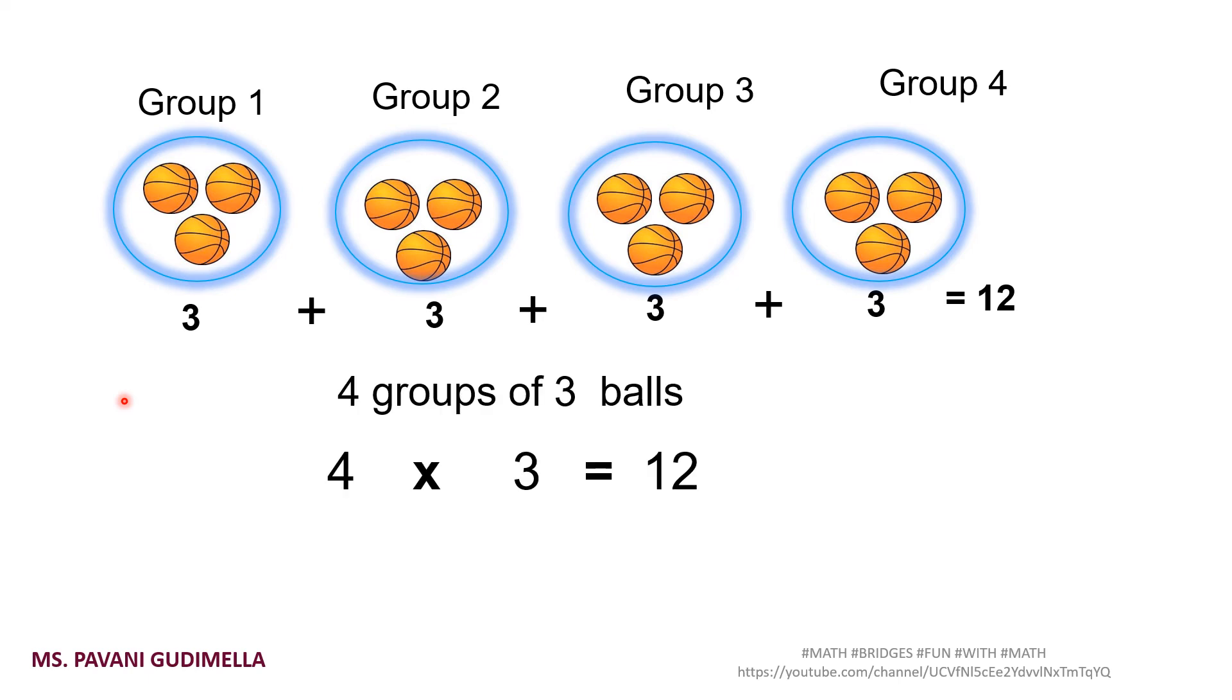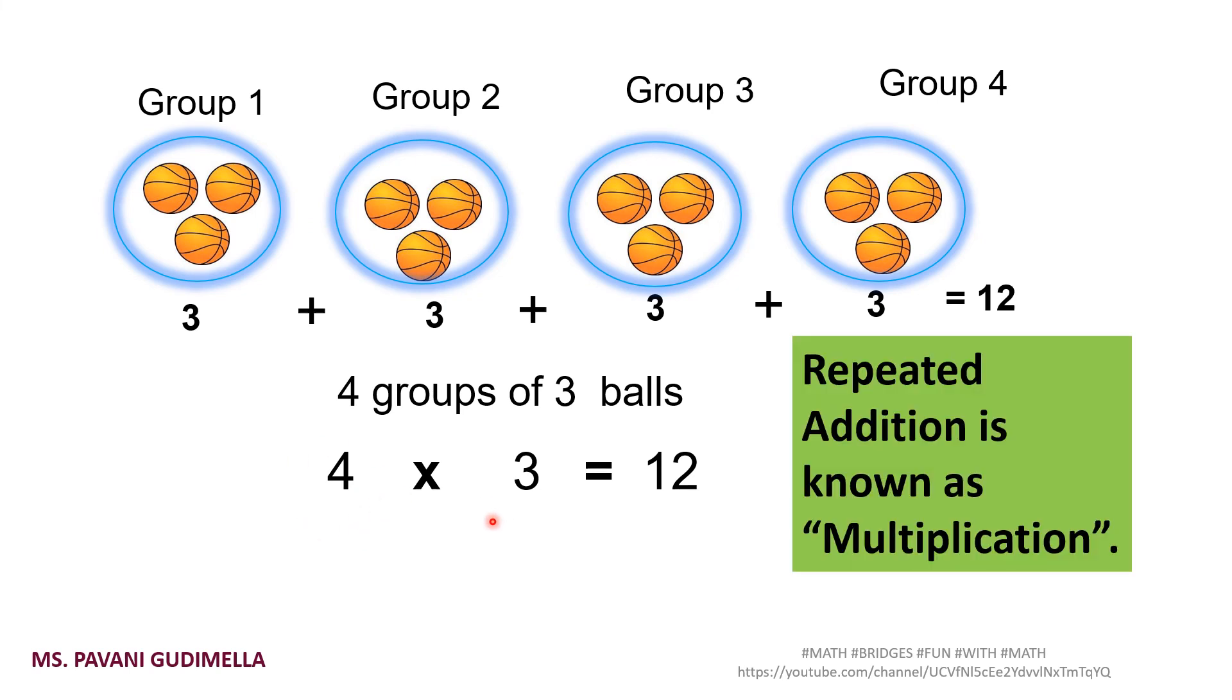How do we write it? The multiplication factor will be 4 groups of 3 balls. That means 4 times 3 has been repeated. We will read it mathematically as 4 threes are 12. That means 4 groups, 3 is repeated. 4 threes are 12. From this we can say that repeated addition is known as multiplication. Instead of adding again and again repeatedly, we can find the product, multiply, and write the answer.